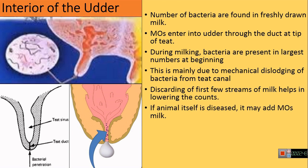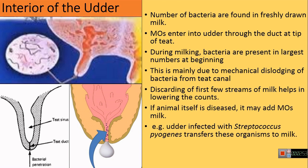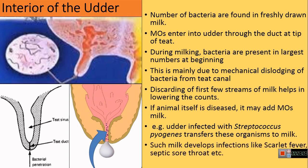Because of this, discarding the first few streams of milk reduces the number of bacteria. If the animal itself is diseased, it may add microorganisms to the milk. For example, if the udder is infected with Streptococcus pyogenes, it transfers these microorganisms into the milk. Consumption of such milk can develop infections like scarlet fever and septic sore throat.